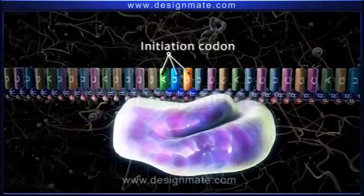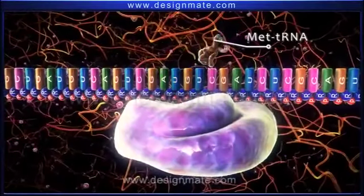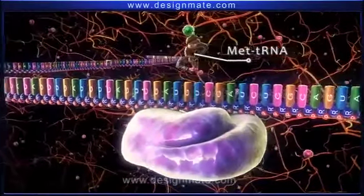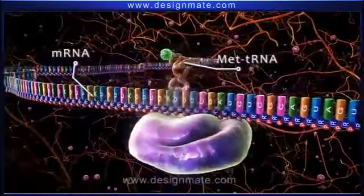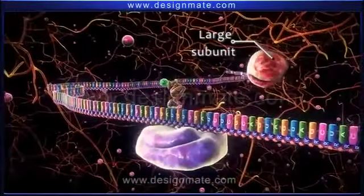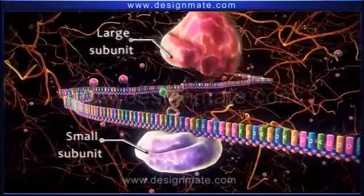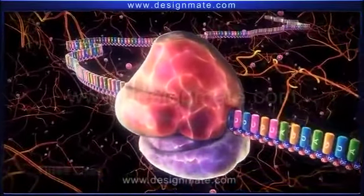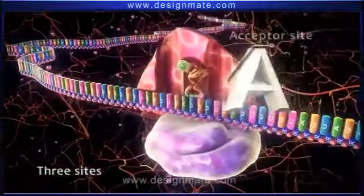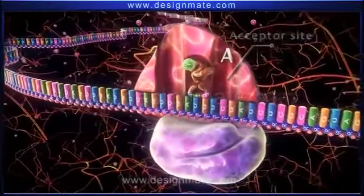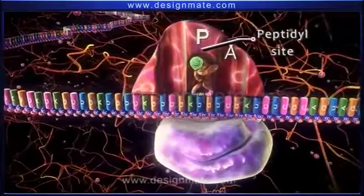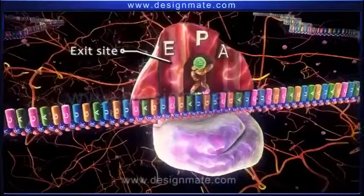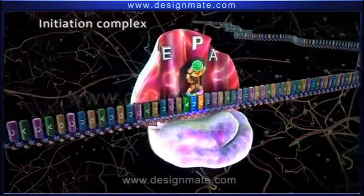At this point, Met-tRNA possessing the anticodon UAC pairs up with the AUG codon of the mRNA. Then a large subunit of ribosome combines with the small ribosomal subunit. The large subunit shows three sites: the acceptor site or the A site, the peptidyl site or the P site, and the exit site or the E site. This whole unit forms the initiation complex.